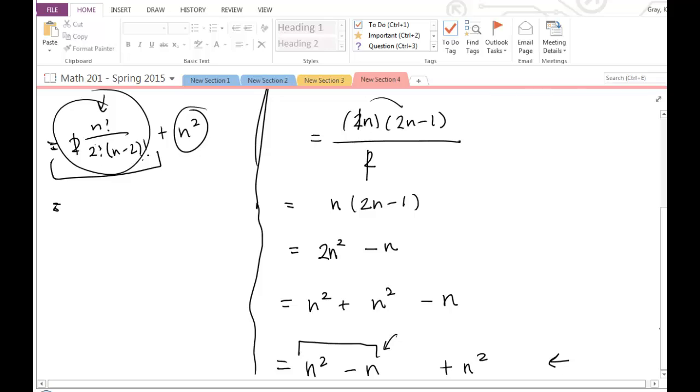Well, I know that 2 divided by 2 factorial is just 1. So then I'm going to be left with n factorial divided by n minus 2 factorial plus n squared. I like that n squared. I got that here. Alright, n factorial divided by n minus 2 factorial. I know that n factorial is n times n minus 1 times n minus 2 times n minus 3 all the way up to 1 and 2. And then I know that n minus 2 factorial is n minus 2 times n minus 3 all the way up to 2 times 1 plus n squared.